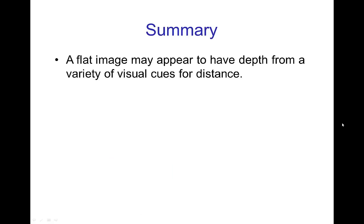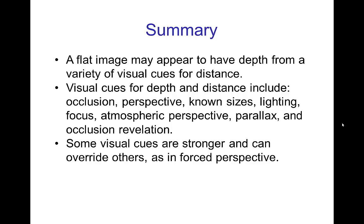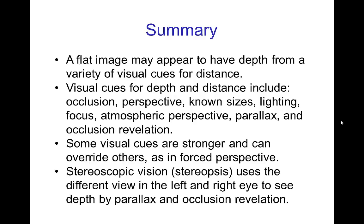In summary, a flat image may appear to have depth from a variety of visual cues for distance. These visual cues include occlusion, geometric perspective, known sizes, lighting and shadows, focus, atmospheric perspective, parallax, and occlusion revelation. Some visual cues are stronger than others, and the stronger ones can override the weaker ones as we see in forced perspective. Finally, stereoscopic vision — also called stereopsis — uses the different views in the left and right eye to see depth by parallax and by occlusion revelation. There's a lot more to say about stereoscopic vision, and we'll cover that in the next tutorial.